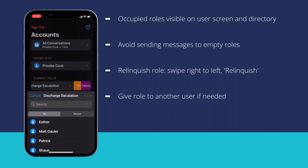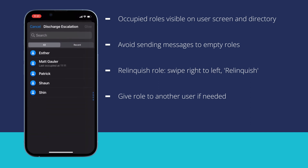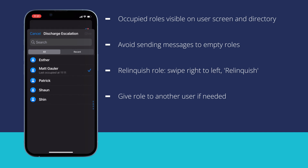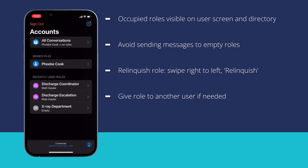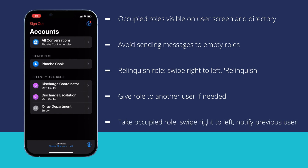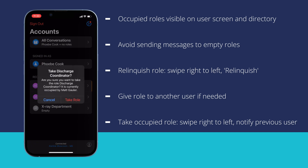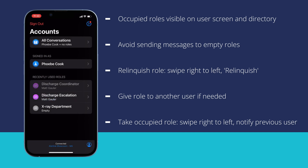If at any point you need to access a role which is occupied by someone else — for example, if they have ended their shift without relinquishing the role — you can take the role from them by swiping right to left on the role. This will transfer the role to you and the other person will be notified.